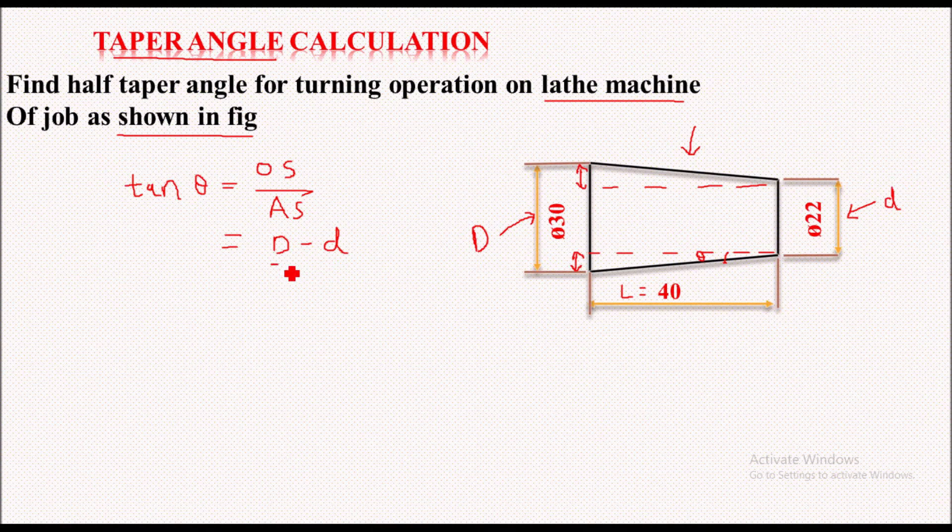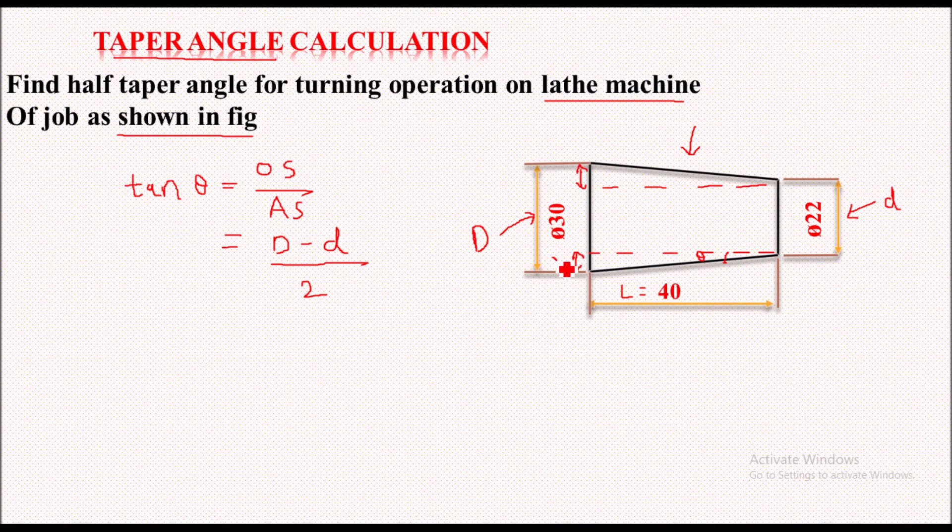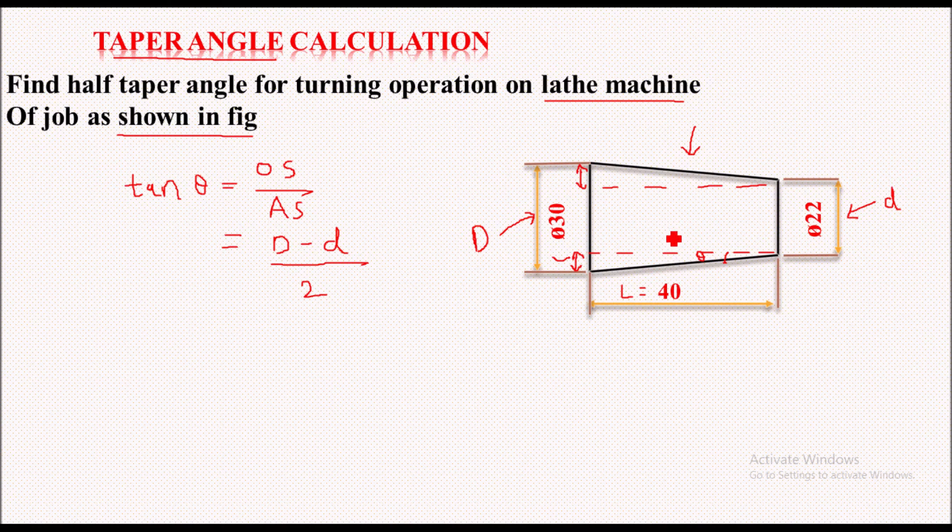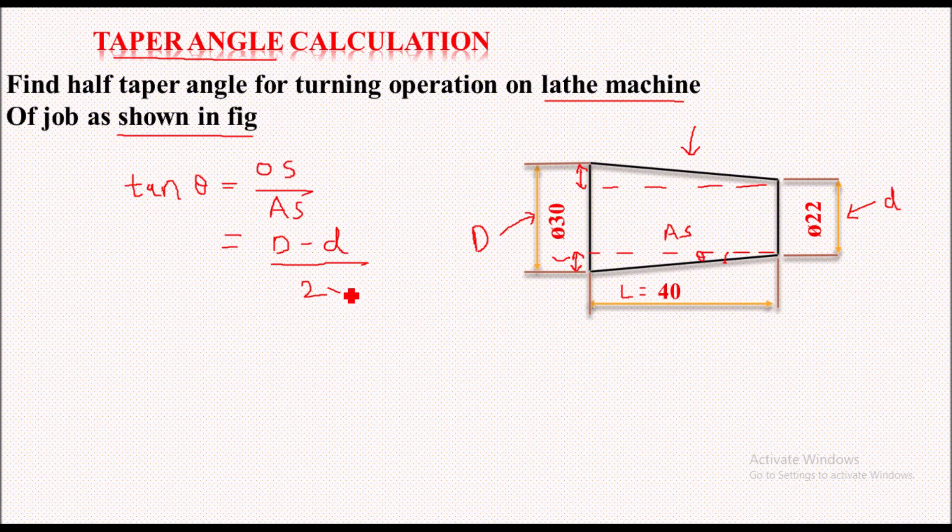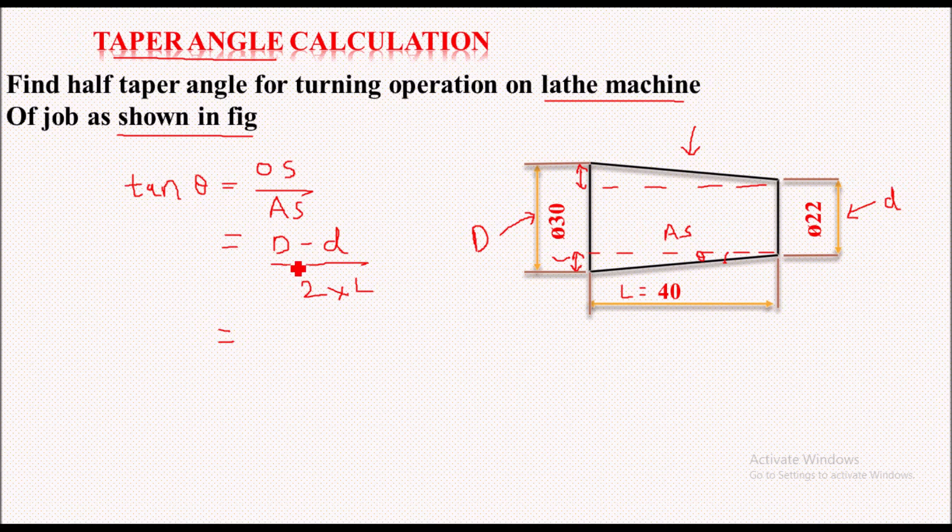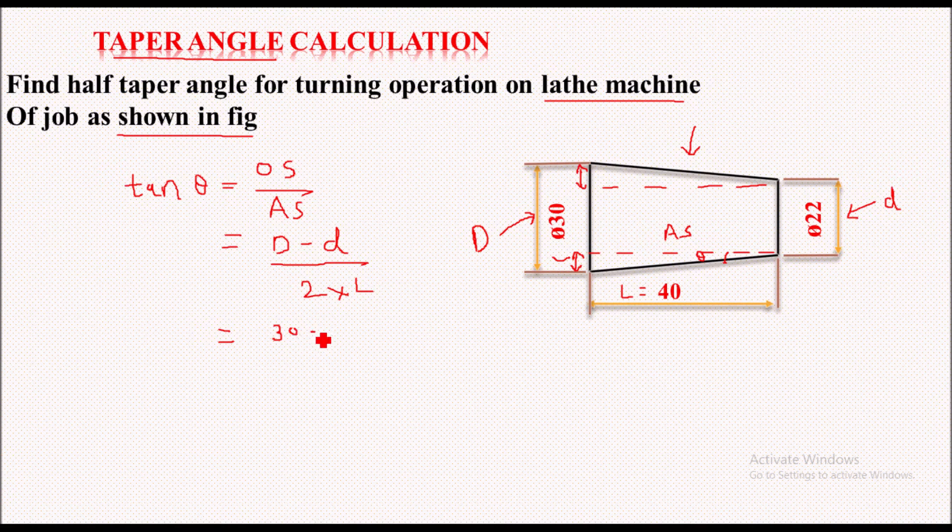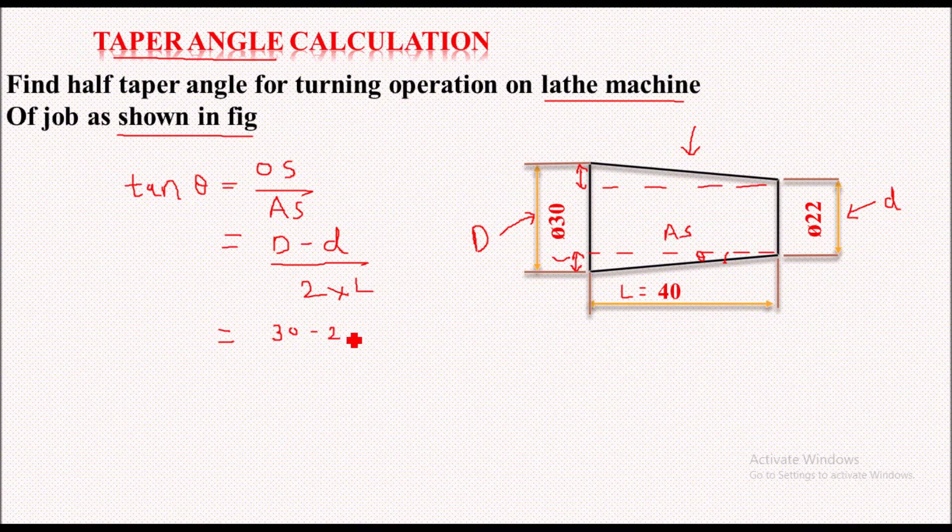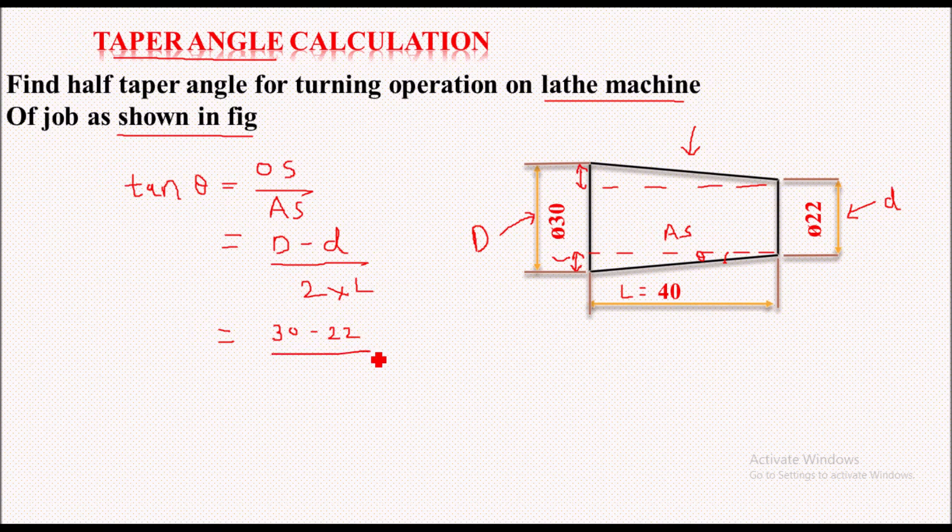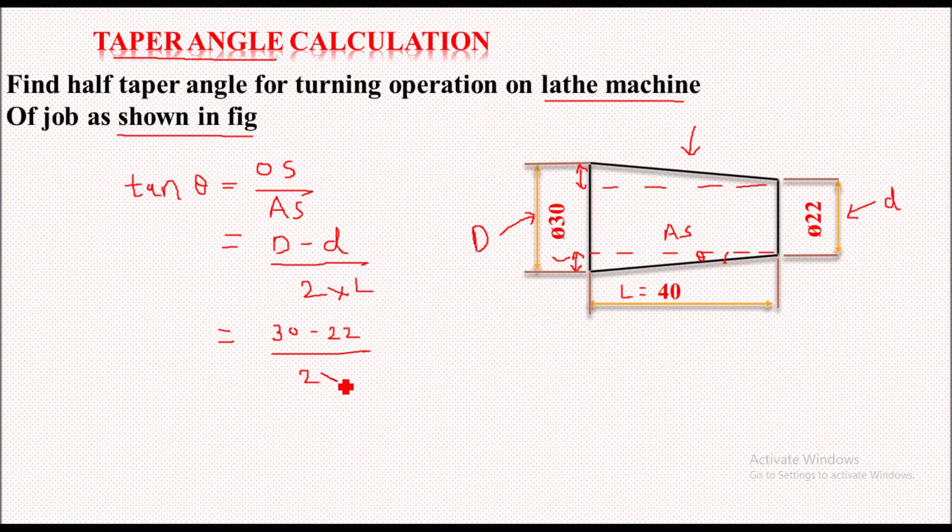And the adjacent side is nothing but this side, that is the adjacent side which is 40 mm. So let's say it is capital L. So putting the values: capital D, that is maximum diameter 30, minus small d, the smaller diameter 22 mm, upon 2 into L. L is nothing but length of taper, that is 40 mm.